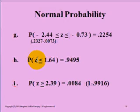Problem H is a simple probability. The probability that Z is less than or to the left of 1.64 can be looked up directly from the table. That probability is 0.9495.